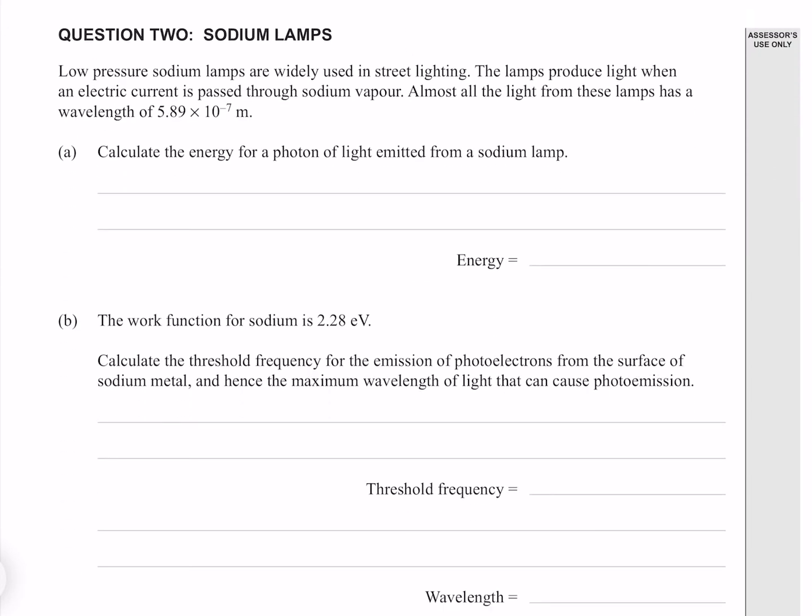Question 2. Low pressure sodium lamps are widely used in street lighting. The lamps produce light when an electric current is passed through sodium vapor. Almost all the light from these lamps has a wavelength of 5.89 times 10 to the minus 7 meters. Calculate the energy for a photon of light emitted from a sodium lamp.